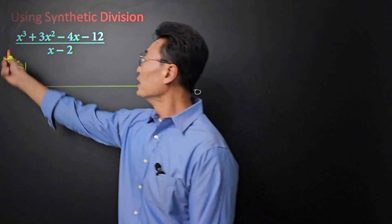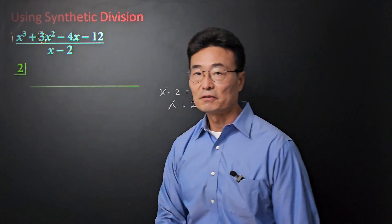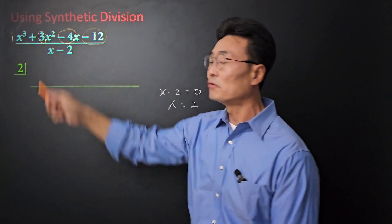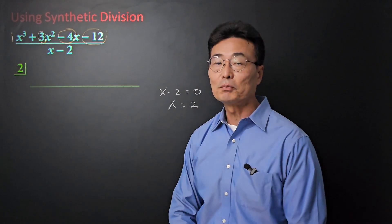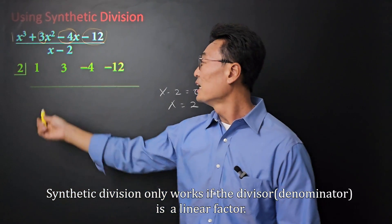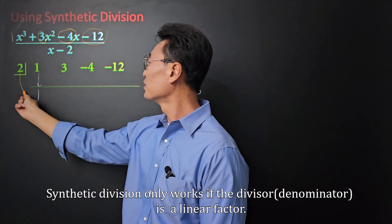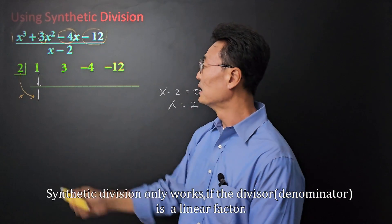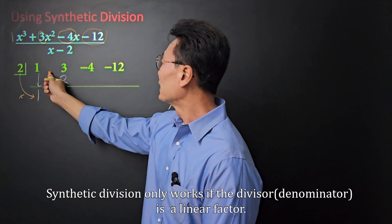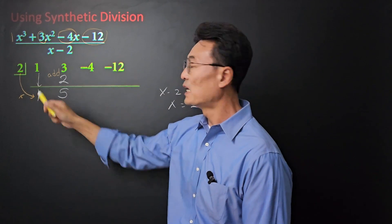Then, we have a 1 in front of x cubed, and we have a 3 in front of x squared, negative 4 in front of x, and negative 12 by itself. So we're going to take these four numbers and put them right here. Next, take the 1, bring it down, and then what we do is we take that 2 that we put on the left, we multiply it to the 1, and we get a 2 right there. And then we always add. That's the important thing here. We add the 3 and the 2, and we get a 5.